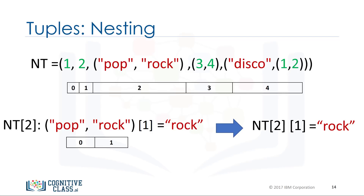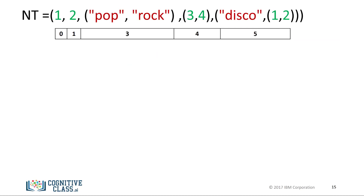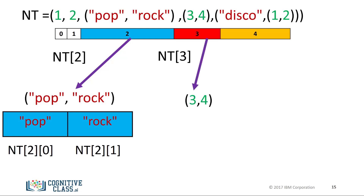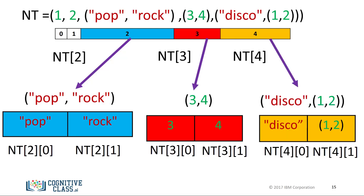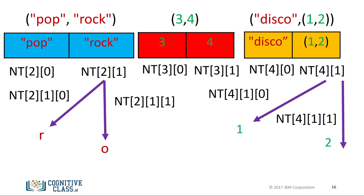It is helpful to visualize nesting as a tree. The tuple has the following indexes. The tuple at index 2 contains a tuple with two elements, and we can access those two indexes. The same convention applies to index 3. We can even access deeper levels of the tree by adding another square bracket, allowing us to access different characters in a string or various elements in nested tuples.